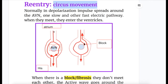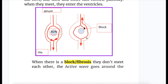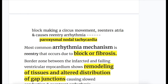Re-entry or circus movements: normally during depolarization, the impulse spreads around the AV node by two electrical pathways — one slow and one fast. When they meet, they enter the ventricles. But when there is a block or fibrosis, they don't meet each other, and the active wave goes around the AV node back into the atrium, causing a circus movement that re-enters the atria — causing re-entry arrhythmia and paroxysmal nodal tachycardia.